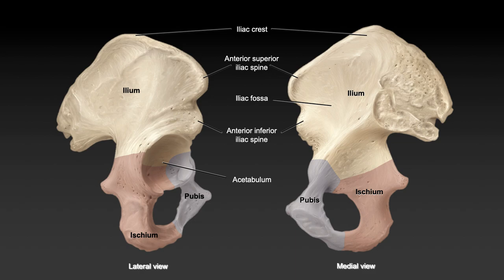The ilium is the biggest of the three bones, wing-like in shape, and it articulates with the sacrum at the auricular surface — an ear-shaped depression. There's one auricular surface on either hip bone, and those sandwich the sacrum between them. So the right hip bone has one, the left hip bone has a corresponding one, and the sacrum attaches right at those points.